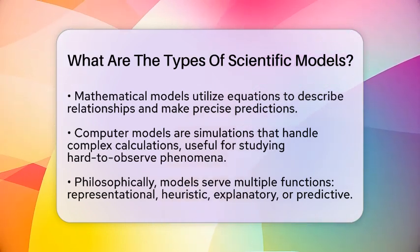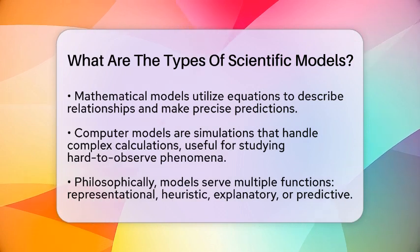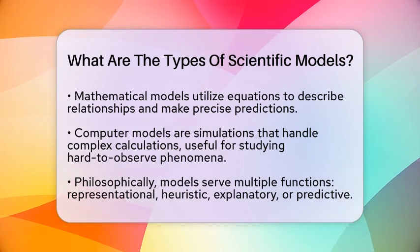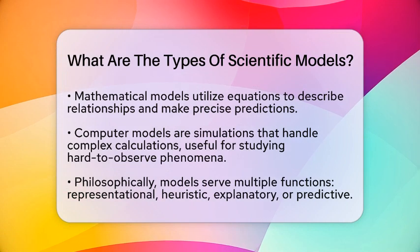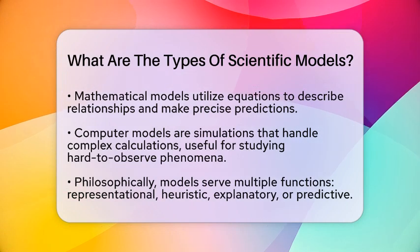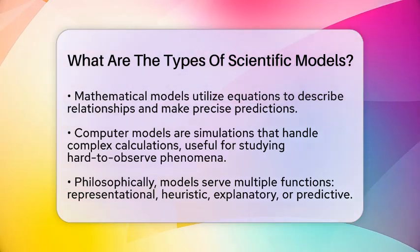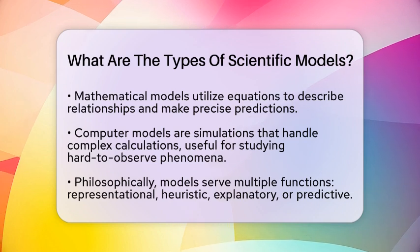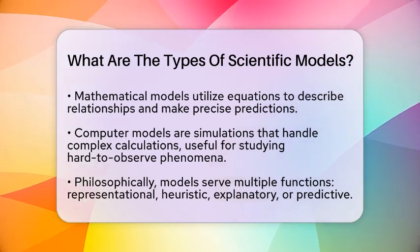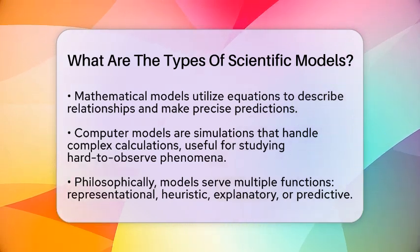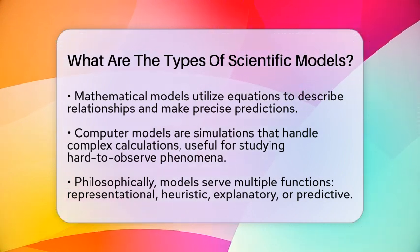Mathematical models allow for precise predictions and can be tested against real-world data. Computer models are simulations created through computer programs. They can handle complex calculations and dynamic processes, simulating phenomena that are hard to observe directly, like climate change or the behavior of subatomic particles.